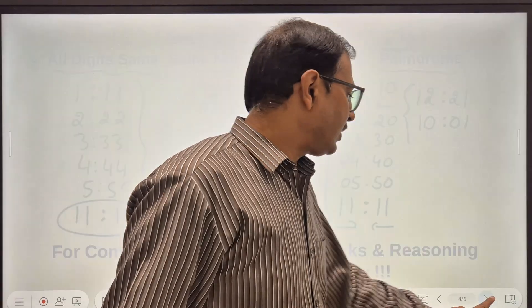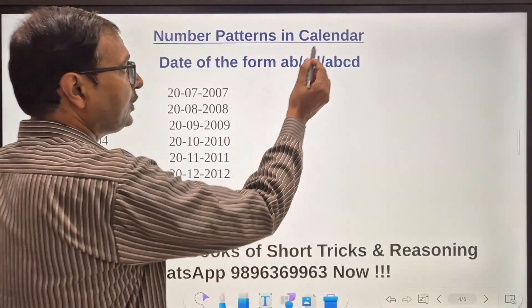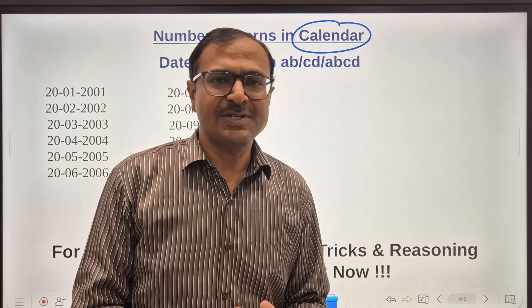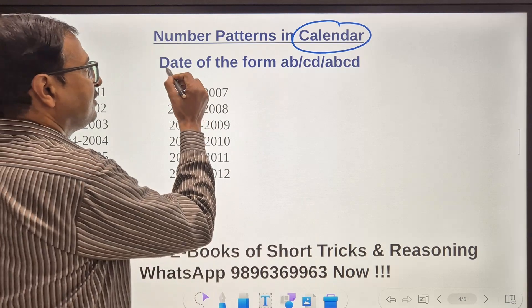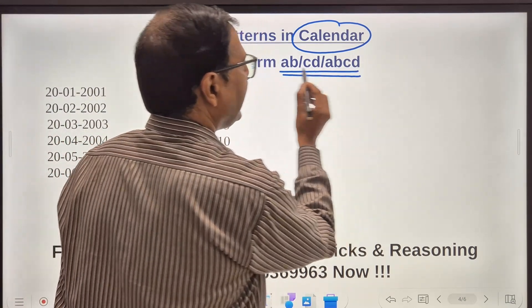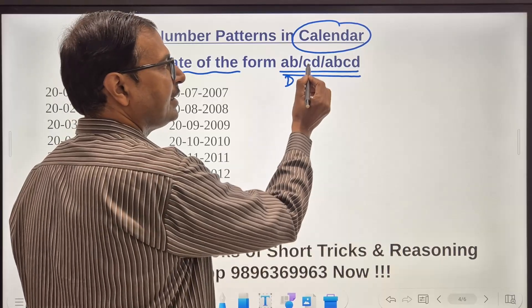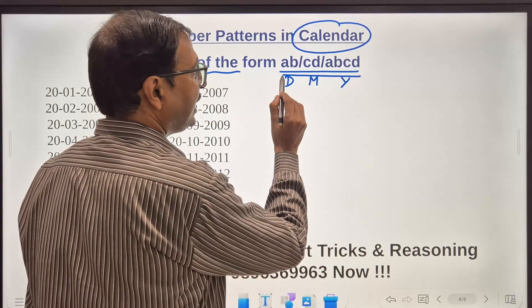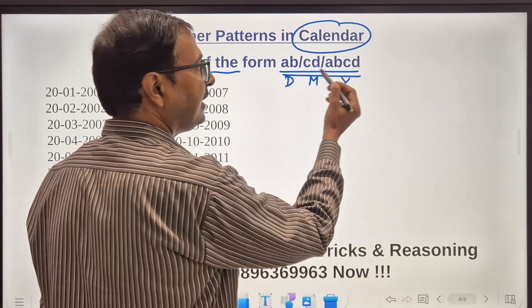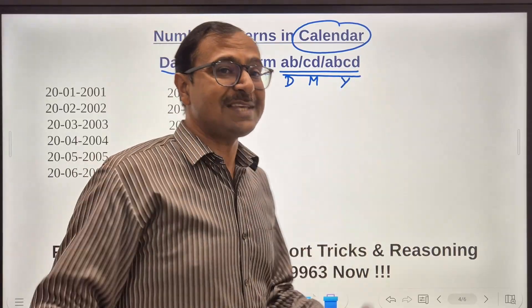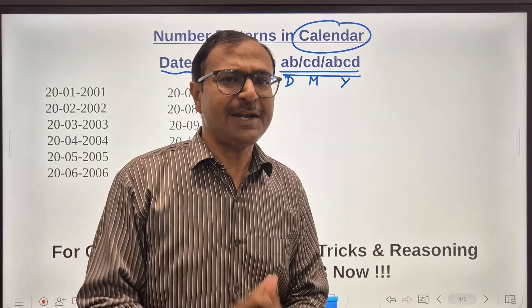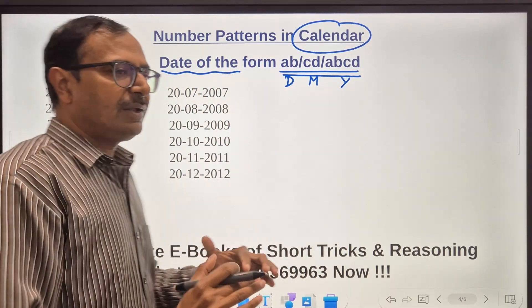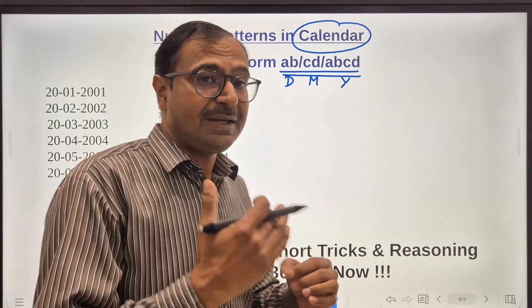Likewise, when you think about a calendar, calendar has very amazing properties and some of them I'm going to take up here in this video. First is when you obtain a date of this form. AB is the date, CD is the month and ABCD is the year. So date and month gives you ABCD and then year also gives you the same thing ABCD. So are there any dates like this?